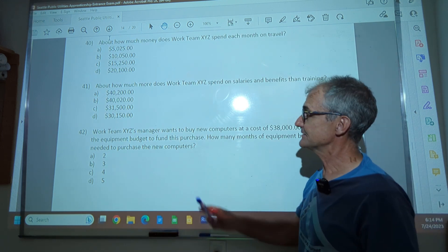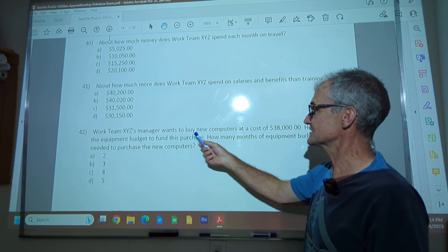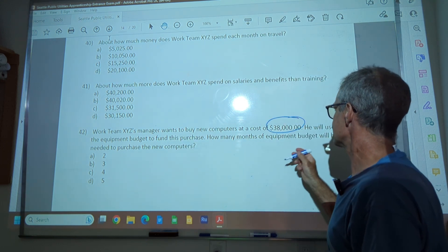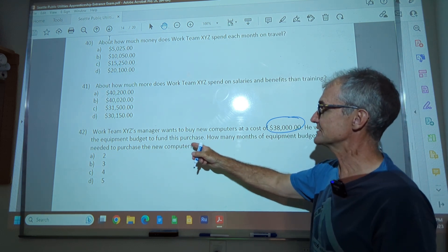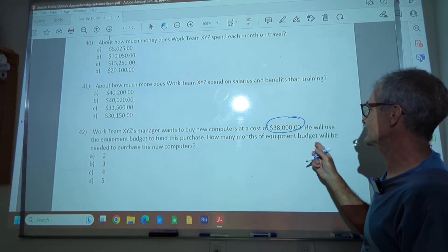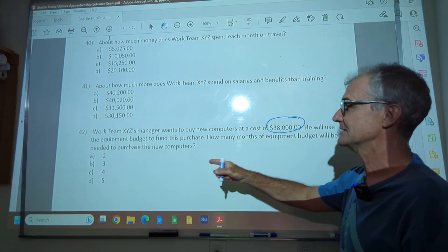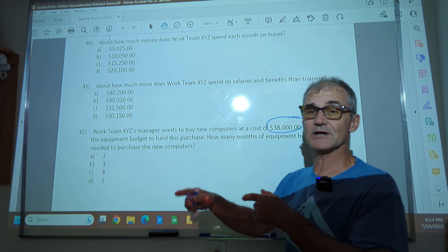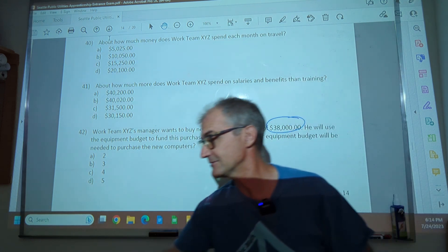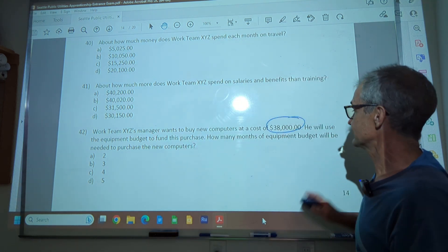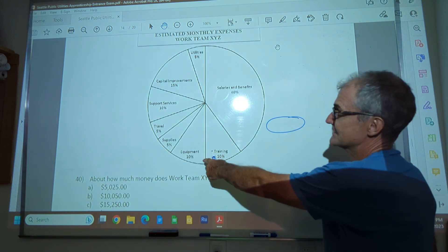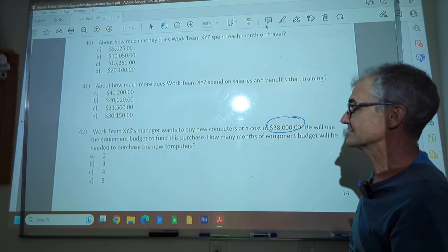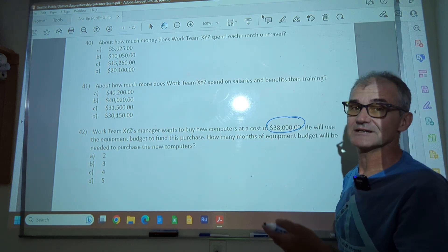Number 42, work team XYZ's manager wants to buy a new computer at a cost of $38,000. He will use the equipment budget to fund this purchase. How many months of equipment budget will he need to purchase a new computers? So now I need to know, what do I want? I want to know the number of months. What do I have? Let me go back up here. It is 10%. So 10% of that hundred thousand is going to be about 10,000 a month. And I got 38,000.